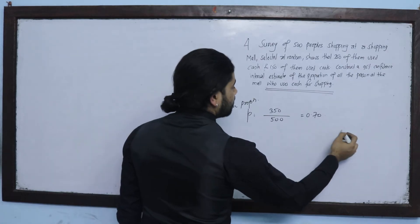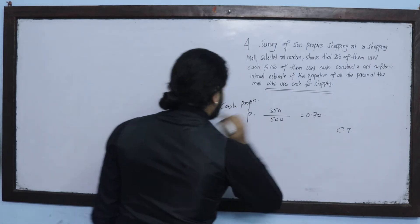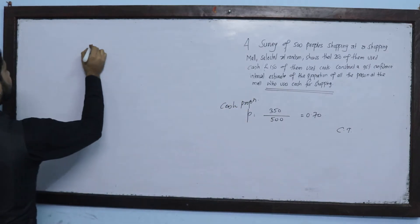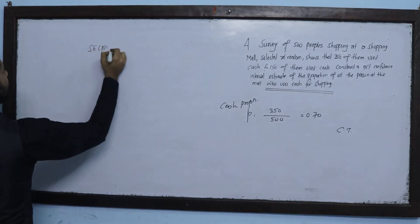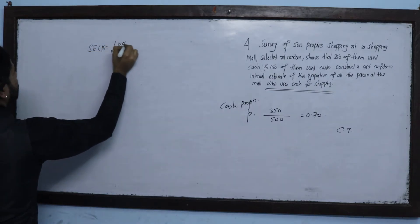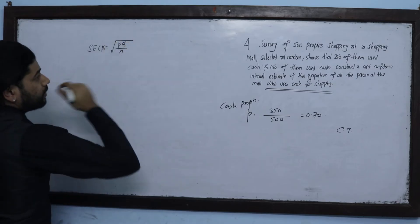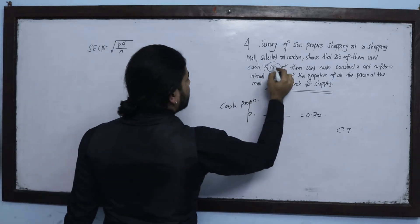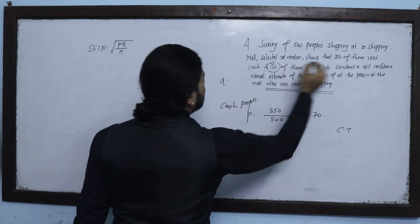H is the population. The standard error for a proportion is the square root of P times Q divided by n, where P is the sample proportion.